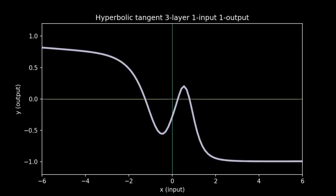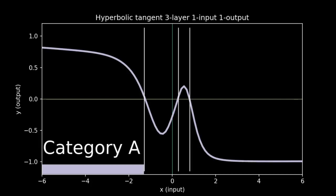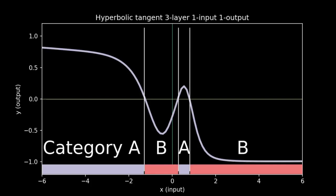We can use these fancy wiggly lines to make a classifier, as we did with logistic regression. Here, we use the zero line as the cutoff. Everywhere that our curve crosses the zero line, there's a divider. In every region that the curve sits above the zero line, we'll call this category A. And similarly, everywhere the curve is below the zero line, we have category B.